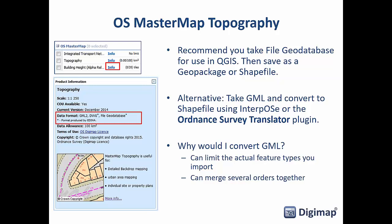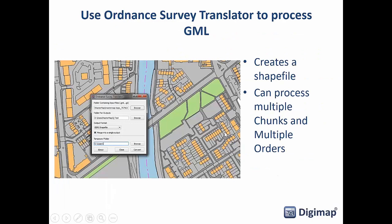The conversion process can actually be used to merge several data orders from Digimap together, or to filter out feature types you're not interested in. That's why you might use GML over file geodatabase. But if you just want everything for the area you've selected, take the file geodatabase and save it as a geopackage in QGIS. The Ordnance Survey translator processes the GML and creates a shapefile, and it can process multiple chunks and multiple orders into a single piece of data.